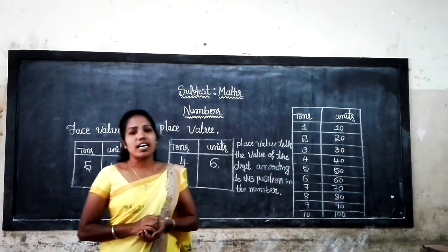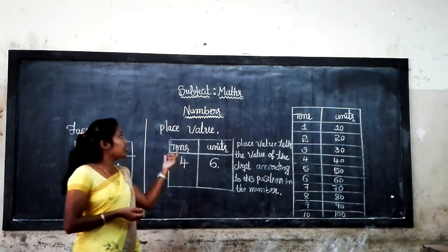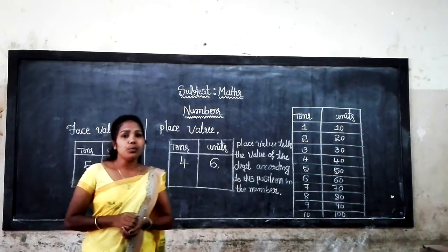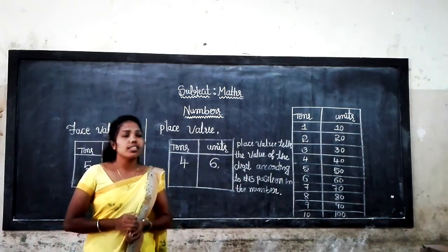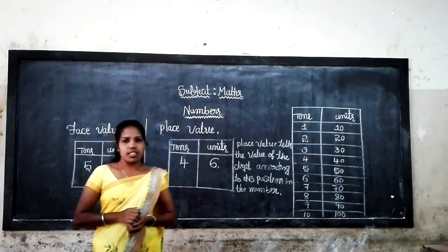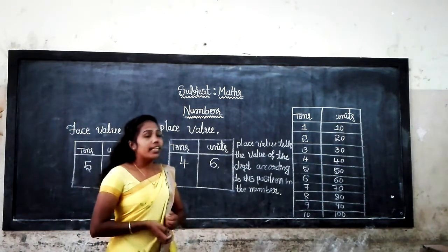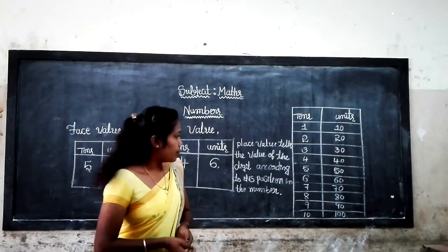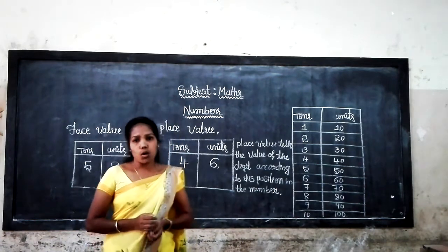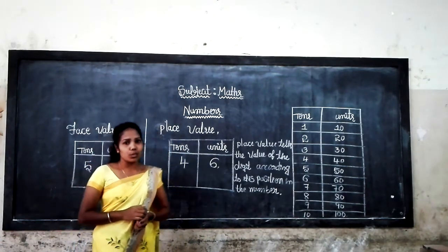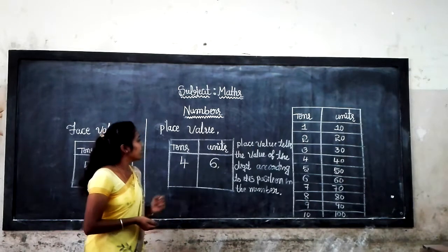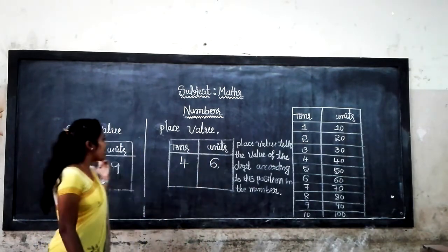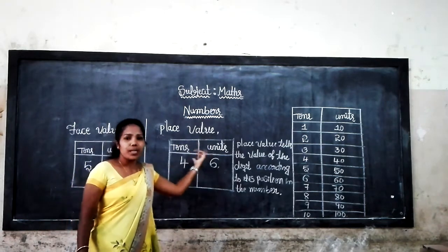In the previous lessons we already learned about numbers. You need two numbers — tens and units — and numbers in words, isn't it? In today's class we are learning what is face value and place value.